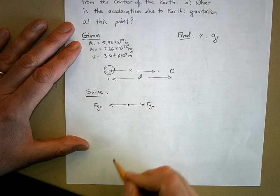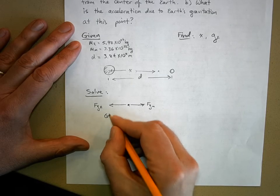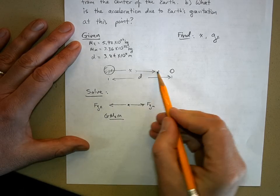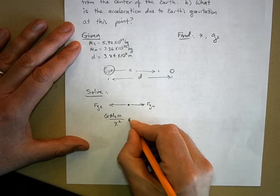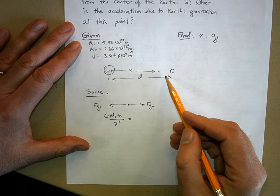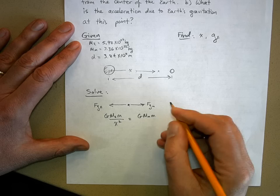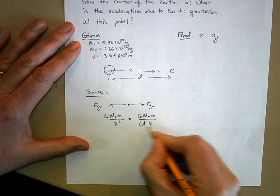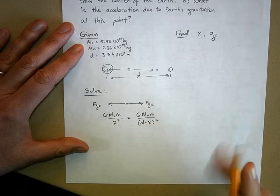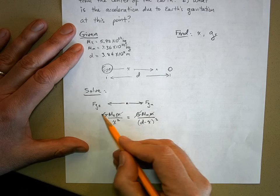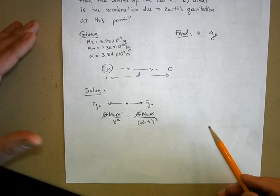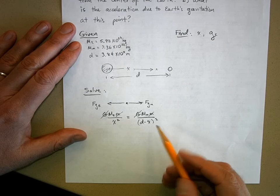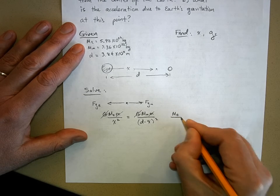The force of gravity due to the earth is G times the mass of the earth times the mass of the spacecraft over x squared. That equals the force due to the moon: G times the mass of the moon times the mass of the spacecraft over (d minus x) squared. The spacecraft mass and gravitational constant G both cancel — this is actually what Newton did, since he didn't know the value of G but could still solve these problems.